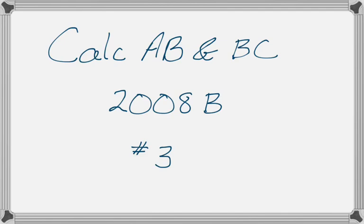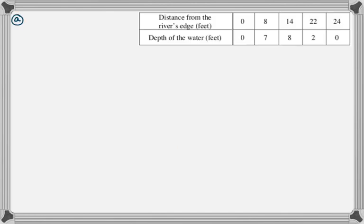We're told that a scientist measures the depth of a river at certain points. The river is 24 feet wide at this location. Measurements are taken in a straight line perpendicular to the edge of the river. We have this data table that you can see, and the velocity at this particular point in feet per minute is modeled by v(t). We don't need that for part A.